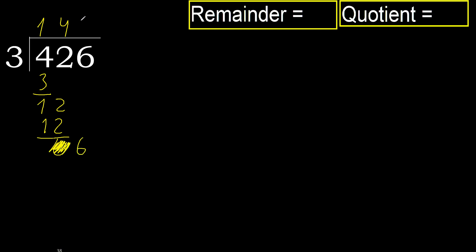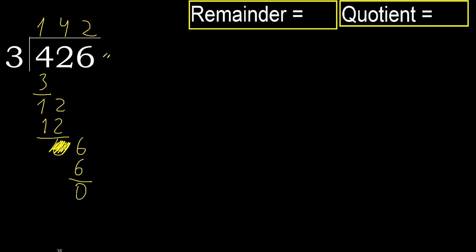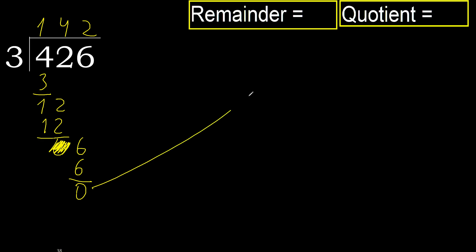3 multiplied by 2 is 6, which is not greater. Subtract: 6 minus 6 equals 0. There is no next number, therefore we finish.